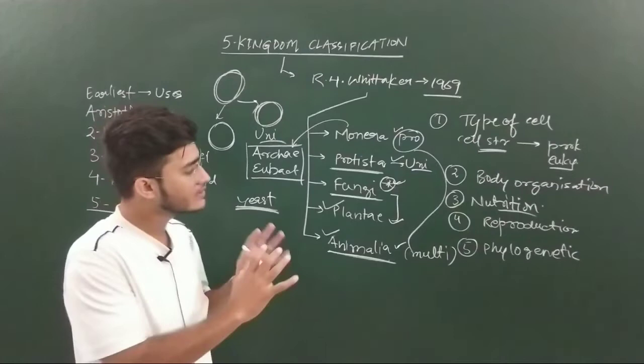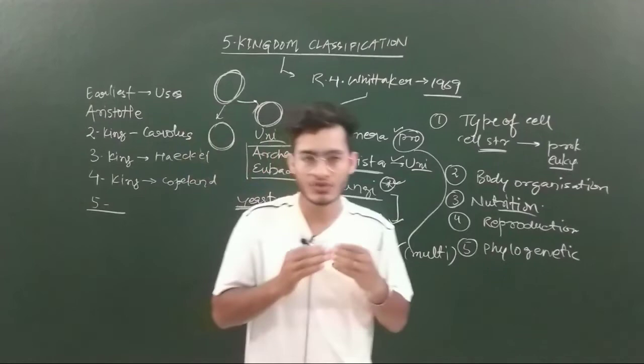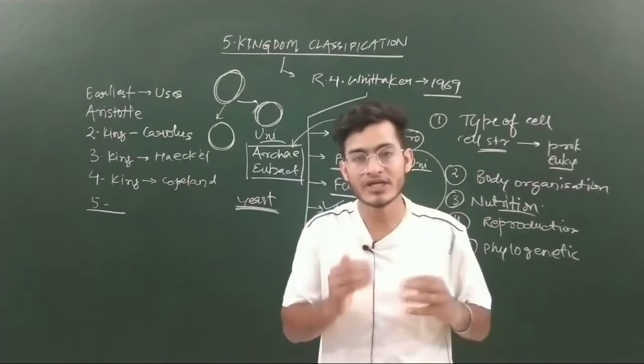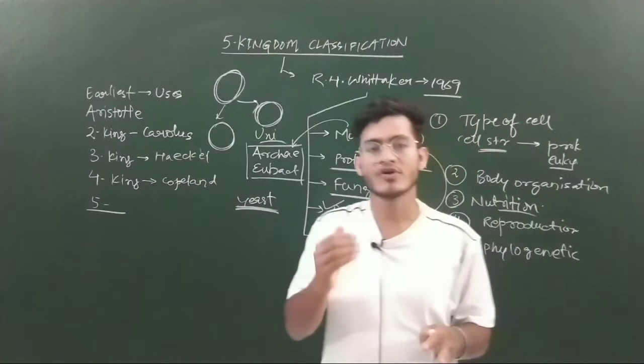So basically this is the brief overview about the Whittaker system of classification. I hope you really understood what it is all about. In the next video we will be talking about the sixth kingdom or the three domain system of classification which is given by Carl Woese. It is newly introduced in your NCERT books so it becomes very important to understand that topic.